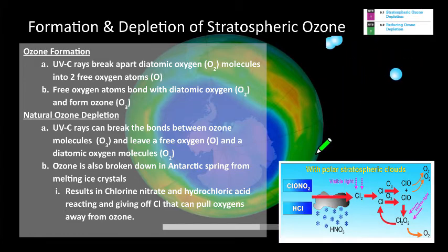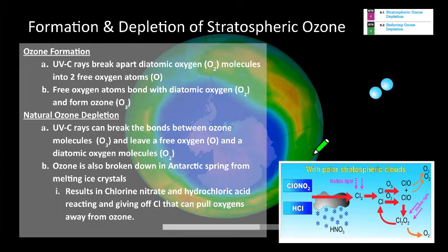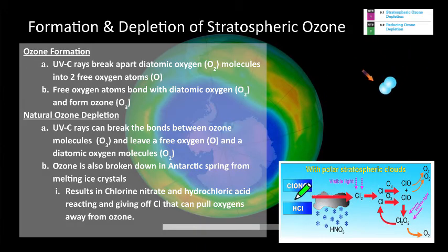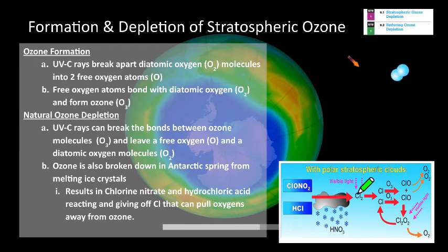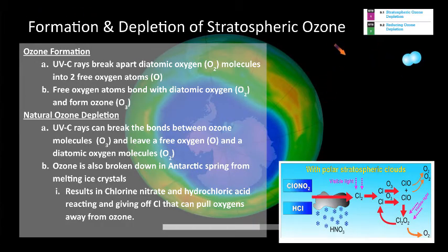In Antarctic spring, melting ice crystals on the South Pole can release chlorine nitrates and hydrochloric acid, which react and give off chlorine that pulls oxygens away from ozone molecules. Polar stratospheric clouds — or ice crystals — release chlorine nitrate and hydrochloric acid, and that chlorine interacts with ozone, causing thinning or reduction of ozone molecules. This is all a completely natural process.